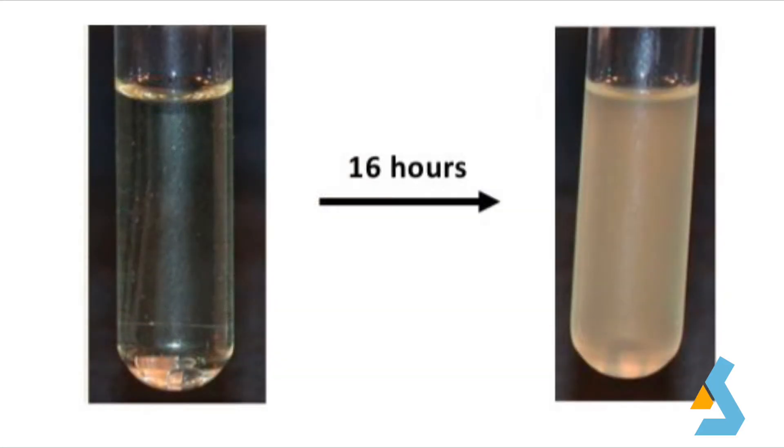After overnight growth, first we must check the turbidity of media to see whether the bacteria have grown or not. If the tube remained like the one on the left, it means that bacteria did not grow and we cannot isolate DNA. If bacteria grow, the culture should look blurry as in the right one.